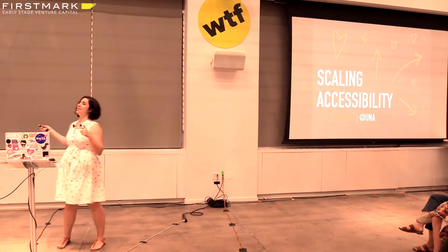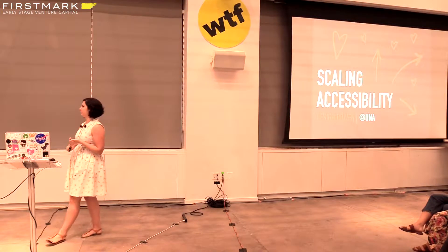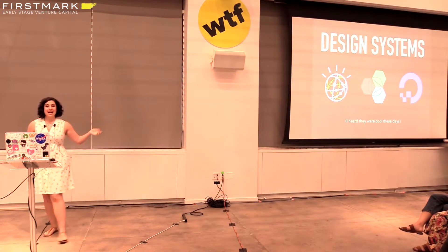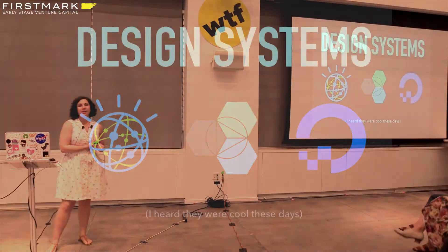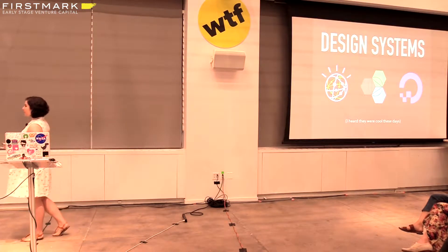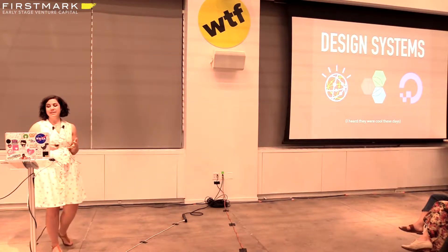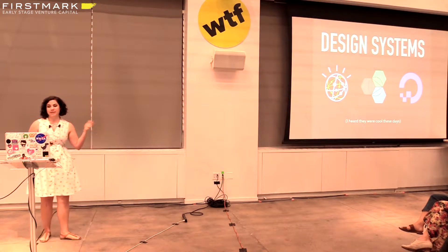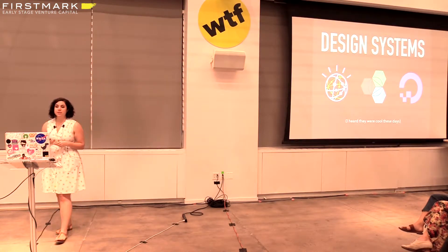My name is Una Kravets. You can find me on the internet at UNA — that's everything like GitHub, Twitter, CodePen, all those things. I've had a bit of experience with design systems. I used to work on the Watson design system at IBM, then I moved to Bluemix at IBM where I was working on the beginnings of what is now the Carbon design system. Currently I work at DigitalOcean on a product called Buie. When I say accessibility, I really mean scaling good practices through something like a design system and component libraries.